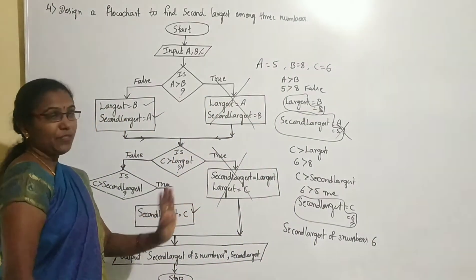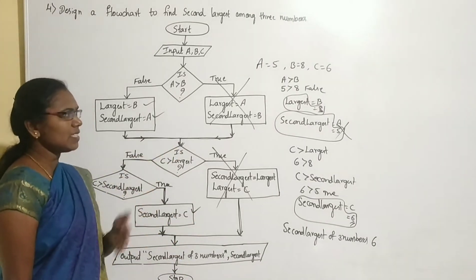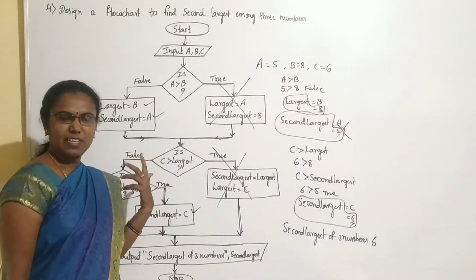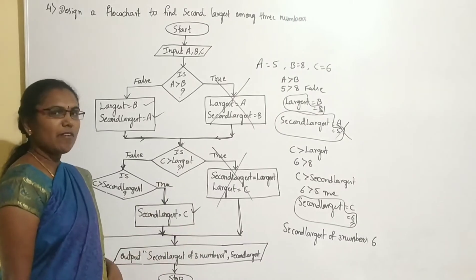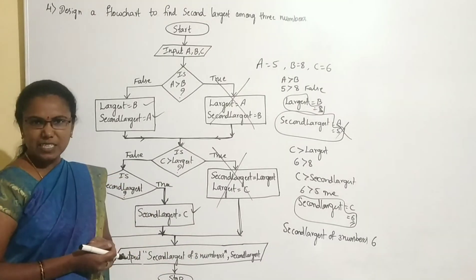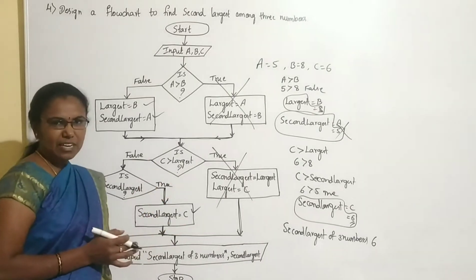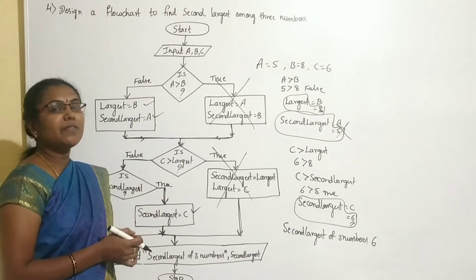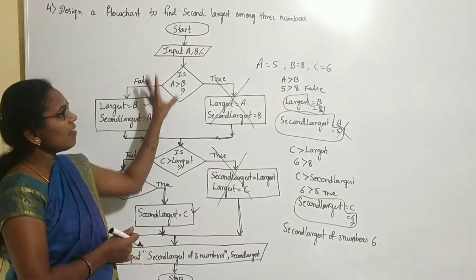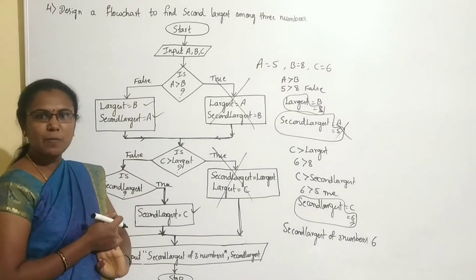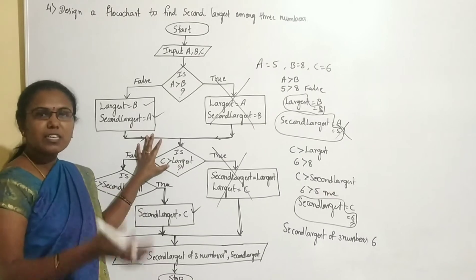If you take different values — for example, A = 15, B = 8, C = 16 — check whether the flowchart works correctly. Try giving different values: one time make A the second largest, one time make B the second largest. Verify the flowchart is working correctly to clearly understand how to design flowcharts for solving problems.